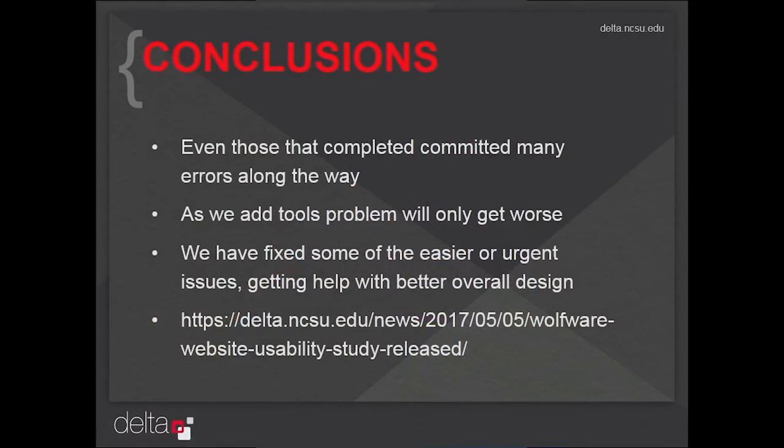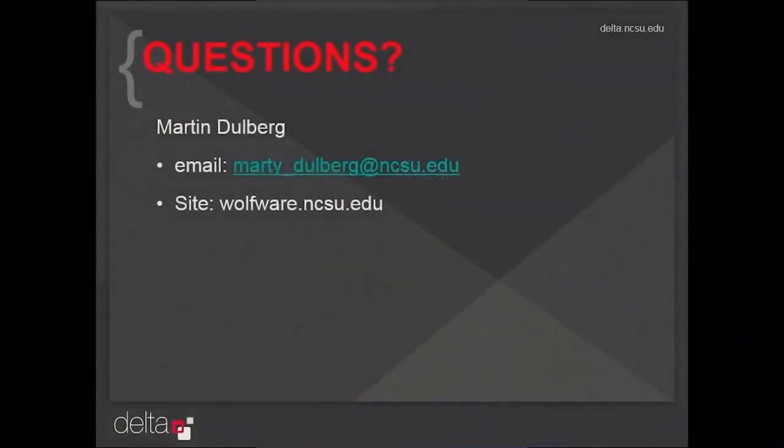My email address is in there as well, so if you have any questions once you've read it, you're more than welcome to get in touch. I also have all of the instruments — the questions we asked and what the responses were. So if you want to do a quick discount usability study, feel free to grab that stuff, print it out, and give it a try. I would also encourage you to go to wolfware.ncsu.edu. You can only see the unauthenticated portion of the site, but at least you can see the clouds that people love or hate.